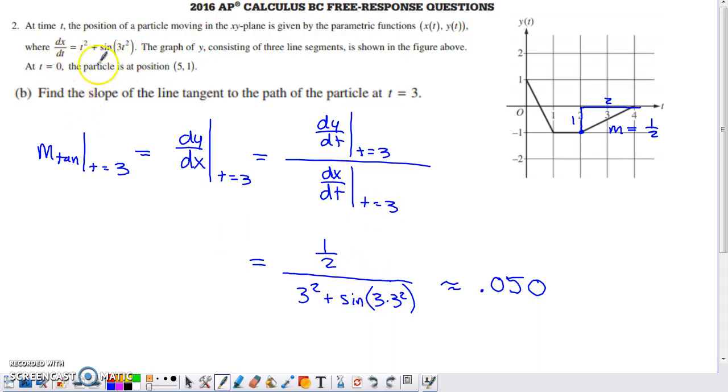We need to divide by that the rate of change of x with respect to t evaluated at 3. That's going to just be a simple evaluation of this. It's going to get a little bit ugly because it will be an irrational value. But if you do this computation on the calculator, you end up with 0.050 for the slope of the line tangent to the path of the particle at 3.